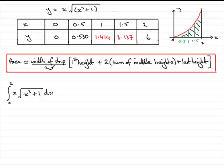So you've got to do the width of a strip divided by 2 and you've got to do the first height, which is this height here, which happens to be 0. And you've got to do plus twice the sum of all the middle heights, that's the height of this, plus that height, plus that height, these y values in other words, plus the last height, this height here, which is going to be 6.